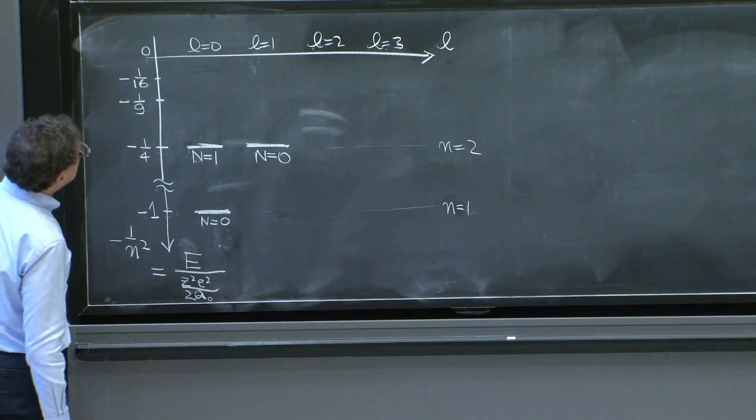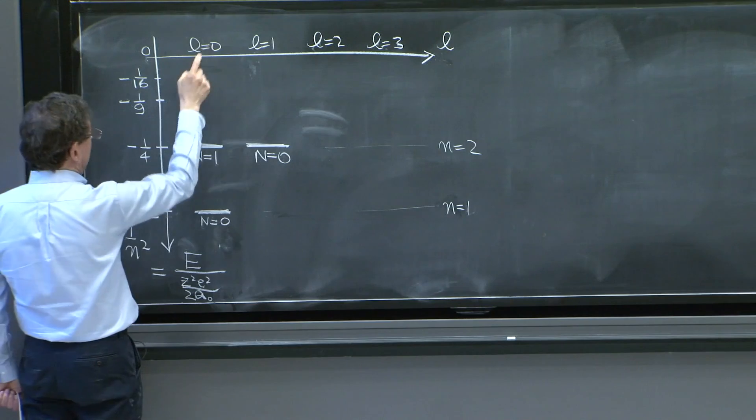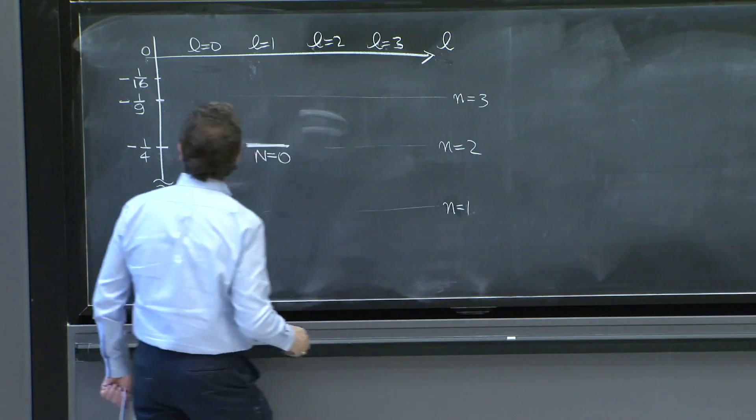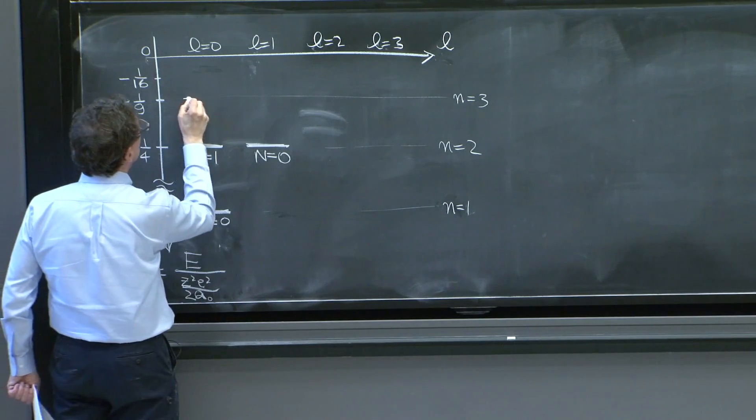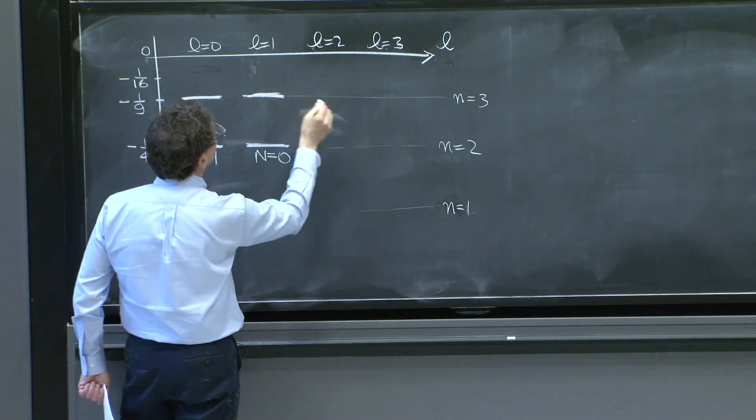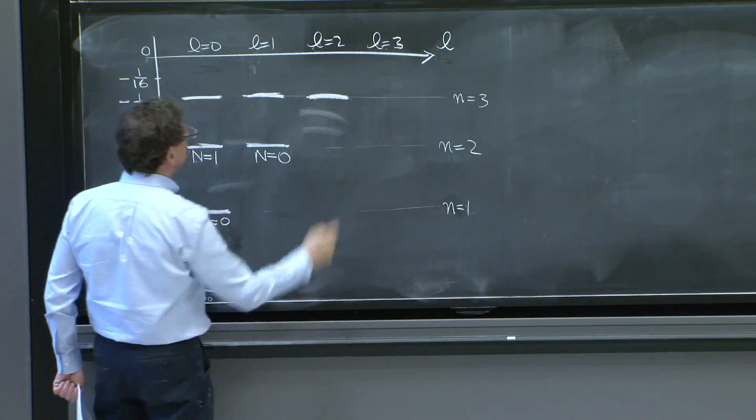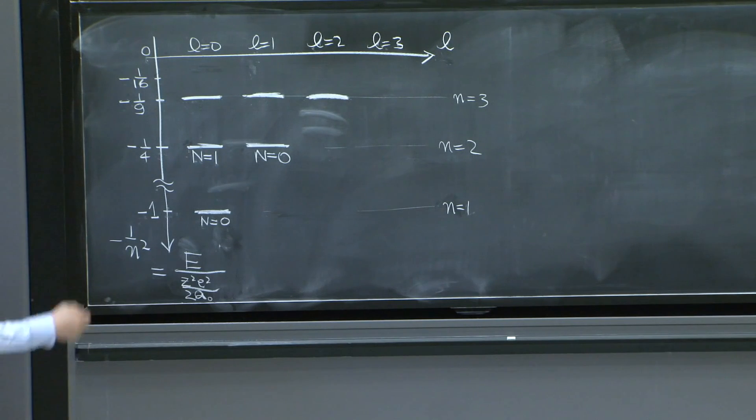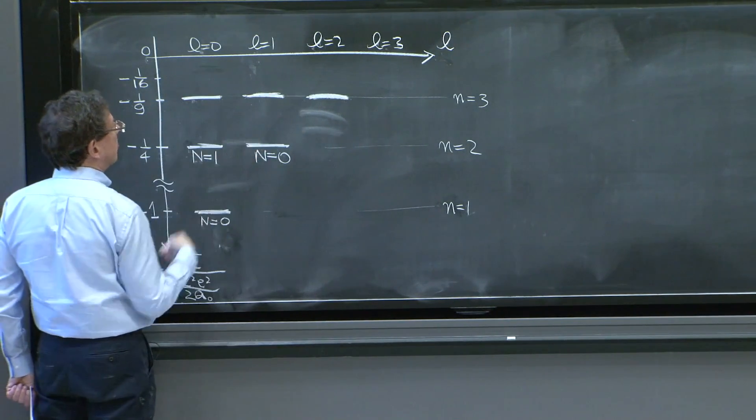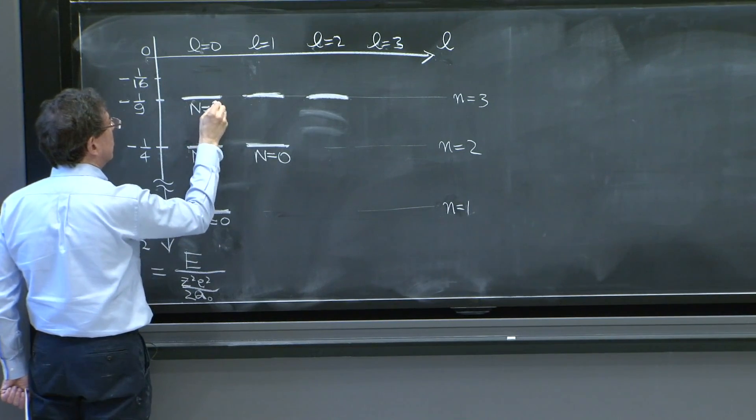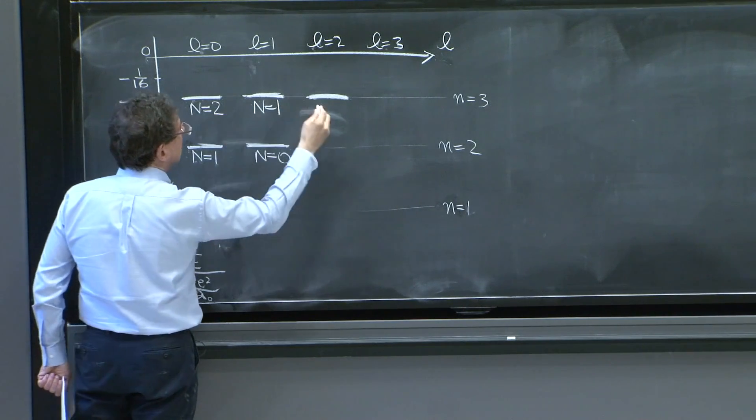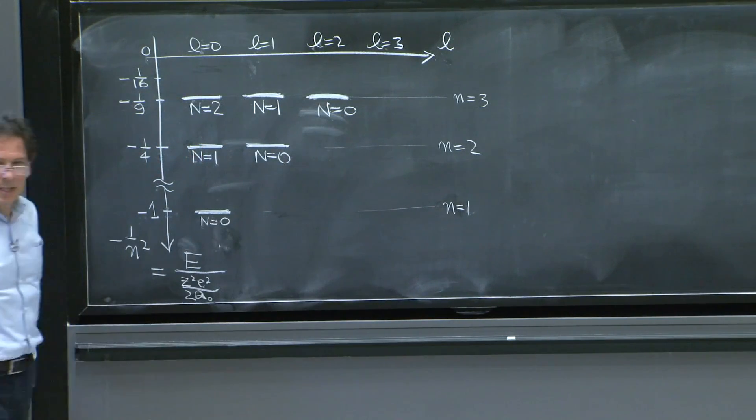And then we go to the next level. Little n equals to 3. Well, little l can now go from l equals 0, l equals 1, and l equals 2. Since little l plus 1 plus capital N is equal to the principal quantum number, here you'll get n equal to 2. n equals 1, and it goes down. n equals 0. These are these states.